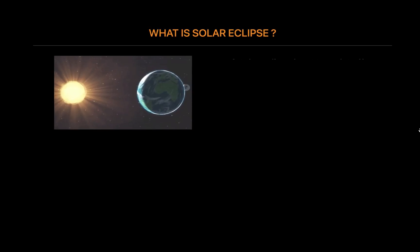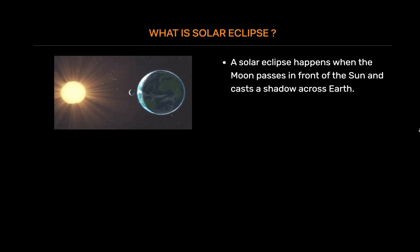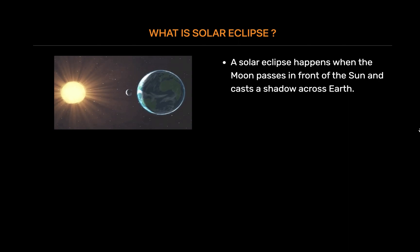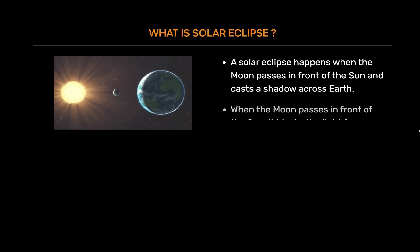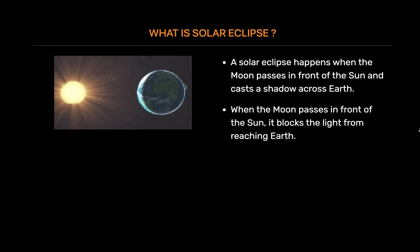What is Solar Eclipse? A solar eclipse happens when the Moon passes in front of the Sun and casts a shadow across Earth. It's also known as an occultation. The reason solar eclipses happen is that the distance between the Sun and the Earth is about 400 times the Moon's distance from the Sun, and the Sun's diameter is approximately 400 times larger than the Moon's. This means that the Sun and the Moon both have a very similar size when viewed from Earth, so when the Moon passes in front of the Sun, it blocks the light from reaching Earth.